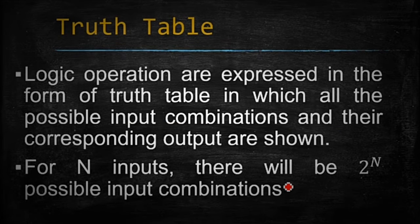Truth table. What is a truth table? Logic operations are expressed in the form of truth table in which all the possible input combinations and their corresponding outputs are shown. For N inputs, there will be 2 raised to power N possible input combinations.